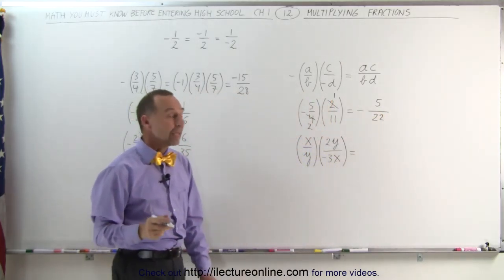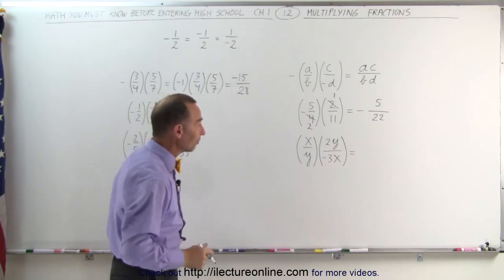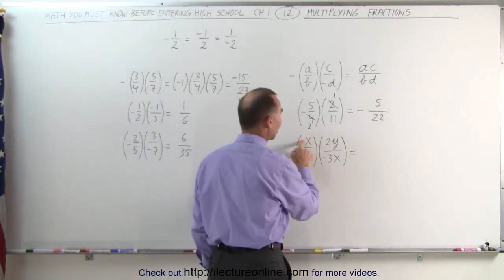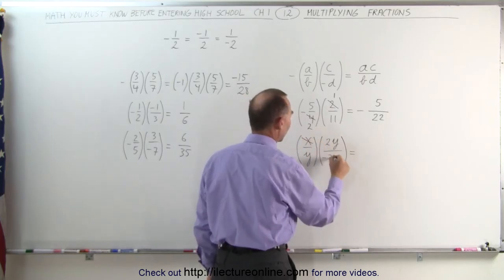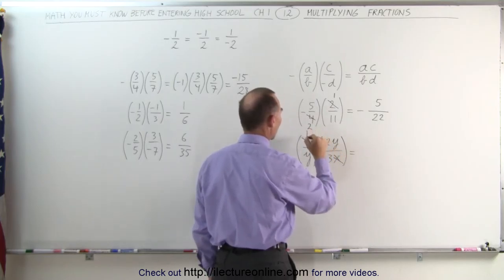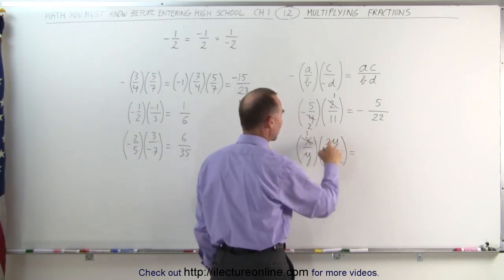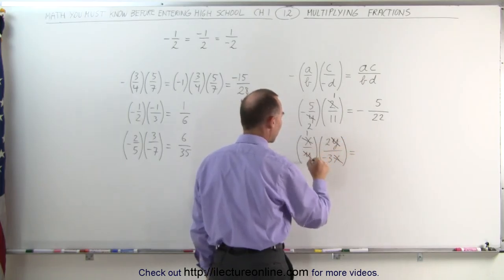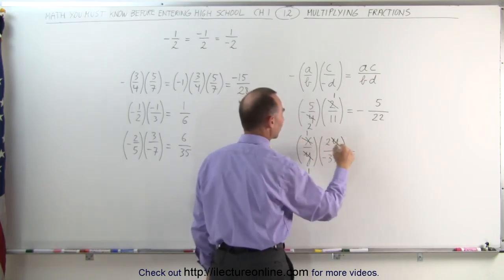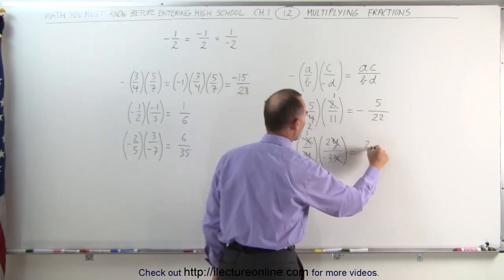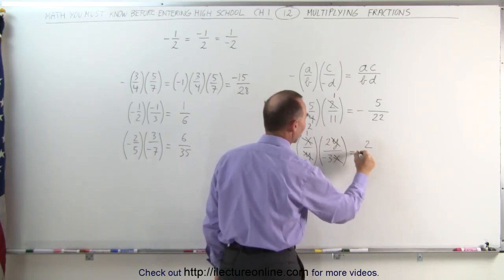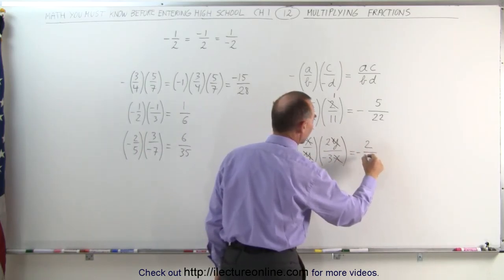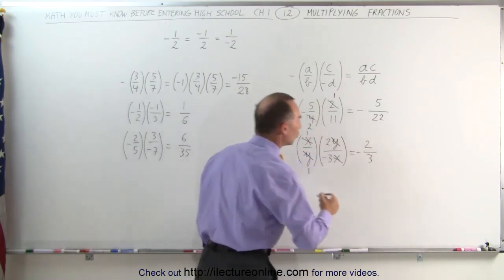Here again, you can see that we can simplify first. We have an x in the numerator and an x in the denominator — this cancels out, becoming 1. This becomes minus 3. Also, we have a y here and a y here, which becomes 1. 1 times 2 is 2; 1 times 3 is 3. We have one negative sign, so we put a negative sign there. This becomes negative 2 thirds.